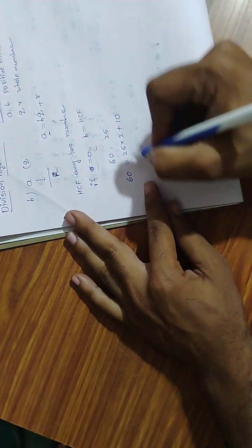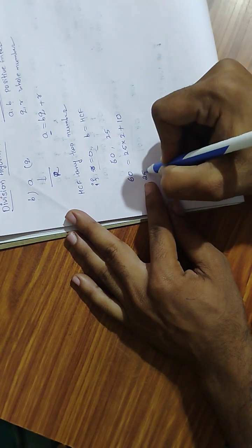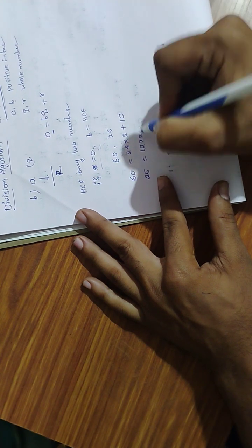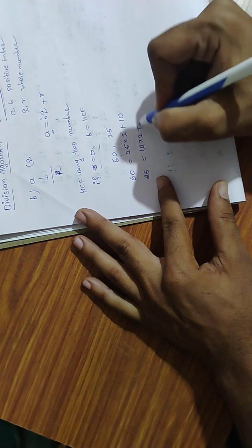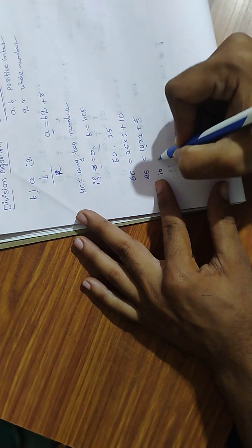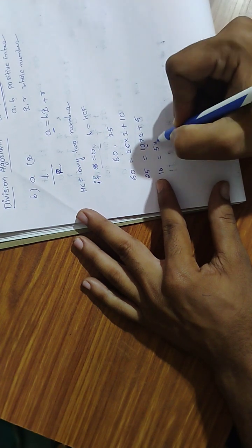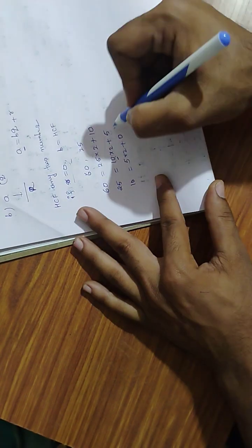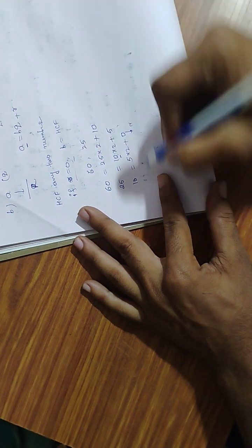In the same way, write 25 here and 10 here: 25 equals 10 into 2 plus 5. Next, write 10 here and 5 here: 10 equals 5 times 2 plus 0. The remainder is 0.